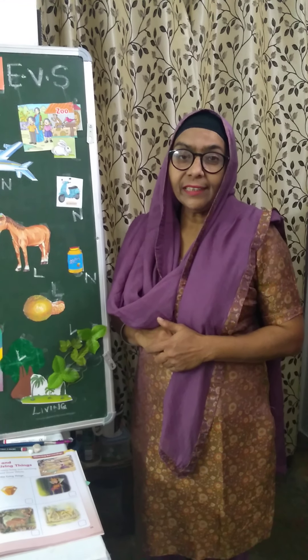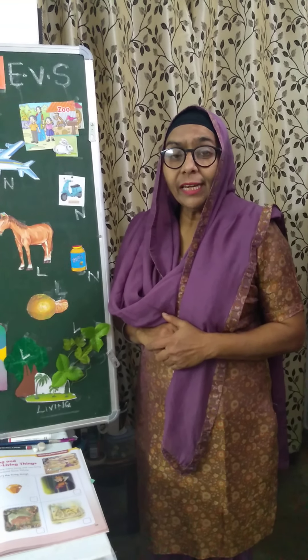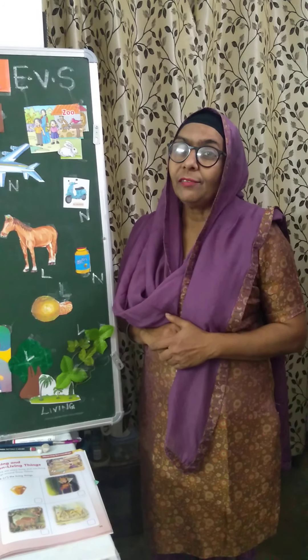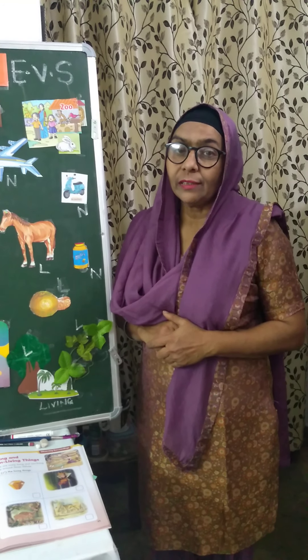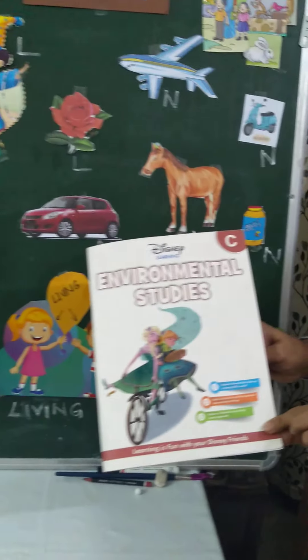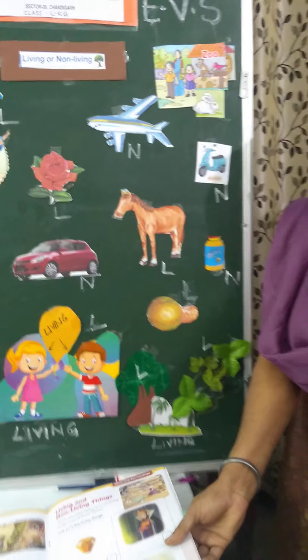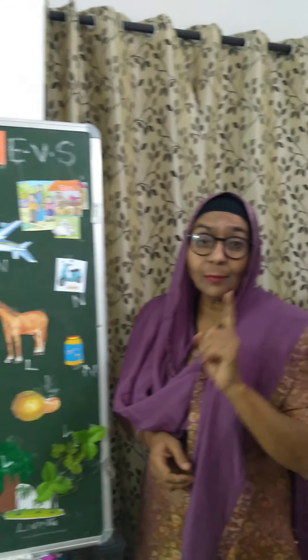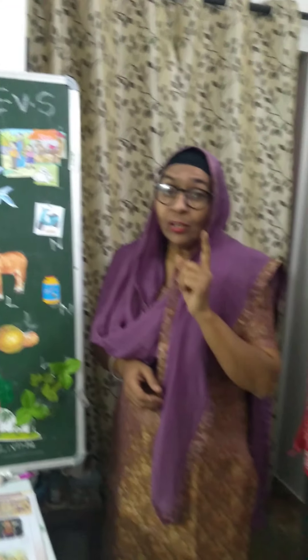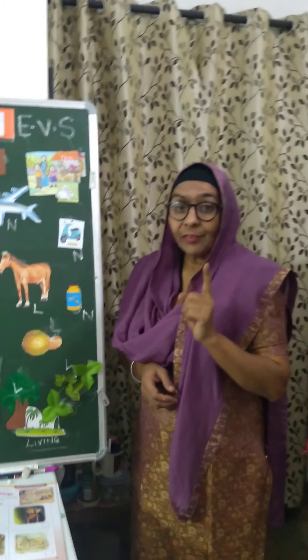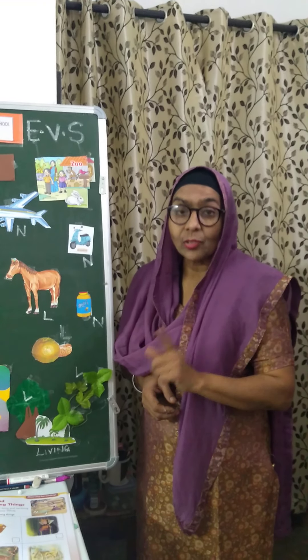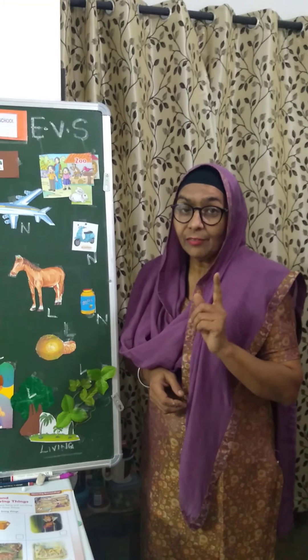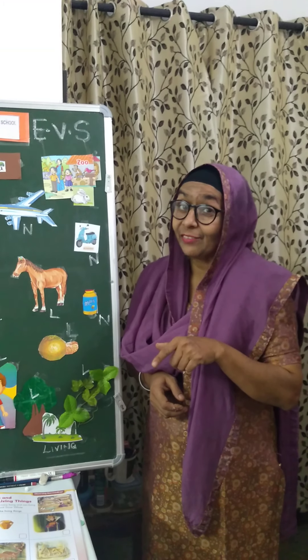Good morning, kids. Today we will explore the concept of living and non-living things from your EBS book. This lesson is on page number 38 and 39. First, I will tell you the tip of the day: always eat fresh fruits and green vegetables.